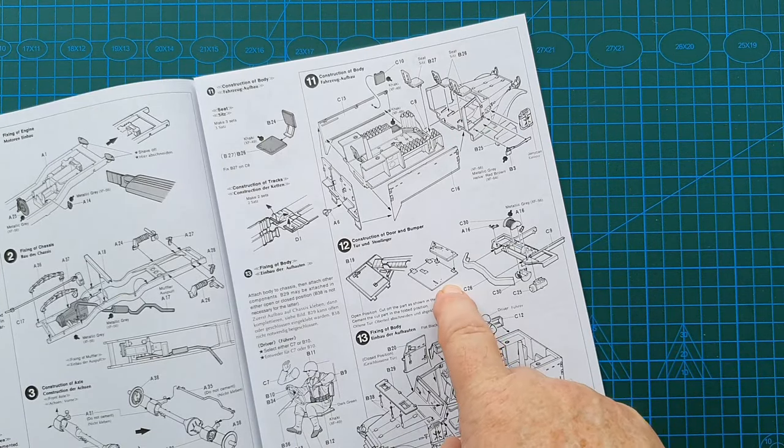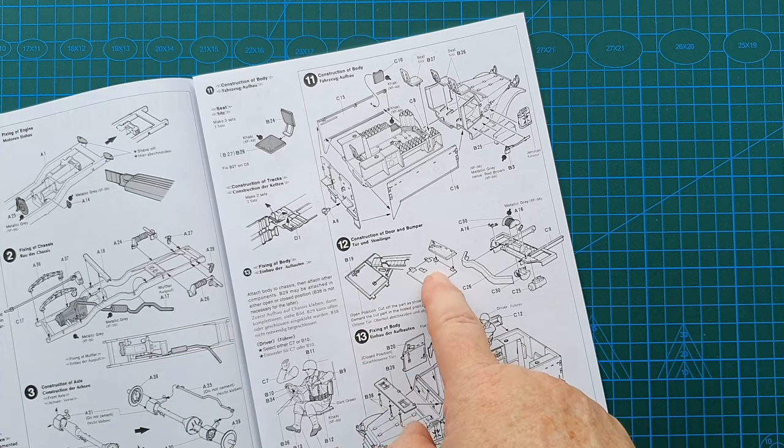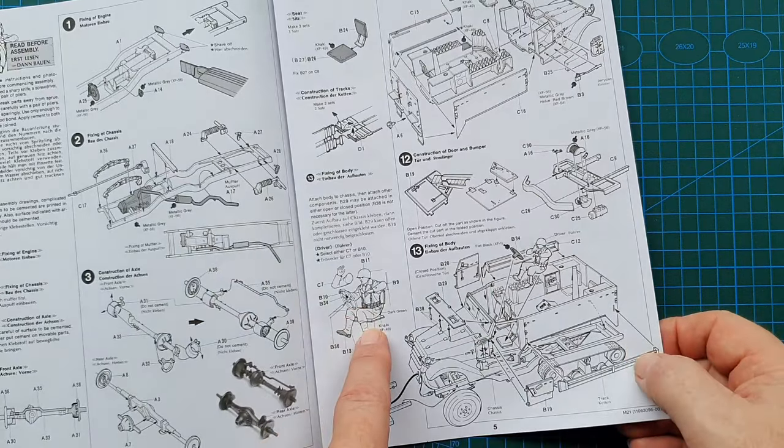Over-leaf you've got the back and the sides going on to the front. You do have a choice with the front doors - you can have them fully closed or cut them very carefully so they can have a folded down position. There is your driver figure.